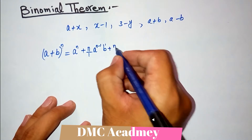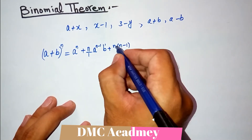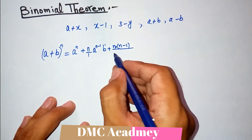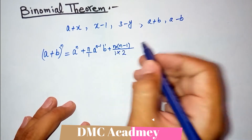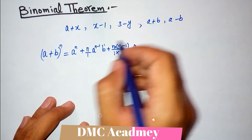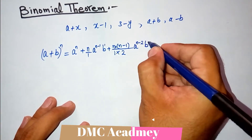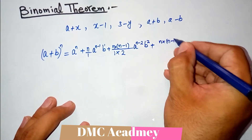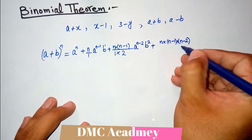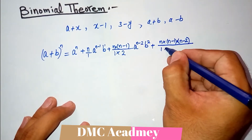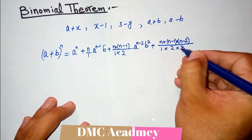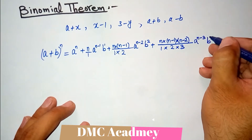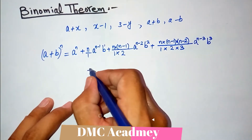Then plus n times n minus 1 — with multiplication between them — divided by 1 times 2. The numerator terms decrease upward and the denominator increases downward. Then a raised to power n minus 2, and b raised to power 2. Plus n times n minus 1 times n minus 2, divided by 1 times 2 times 3, and a raised to power n minus 3, and b raised to power 3. It continues like that.